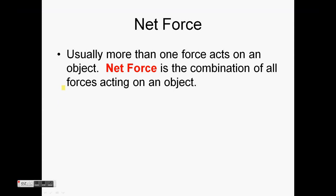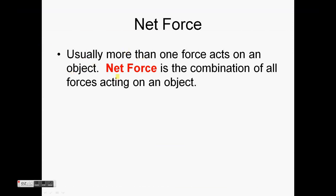Usually, there's more than one force acting on an object. The net force is the combination of all those forces acting on an object. So we look at this picture. You see the girl is pushing on the piano with a force of 25 Newtons to our right. The boy is pulling with a force of 20 Newtons to our right. So you add them up. 25 plus 20 Newtons equals 45 Newtons to the right.